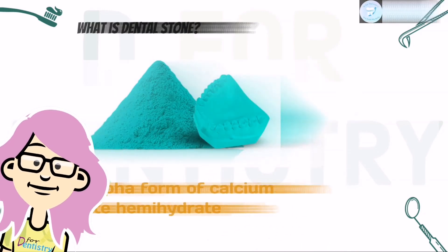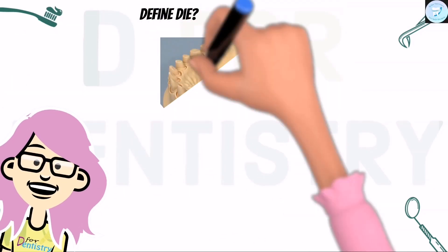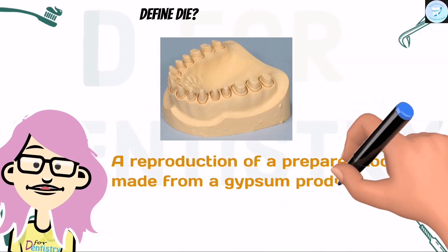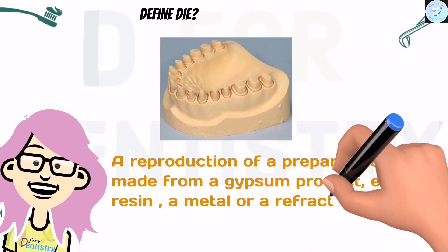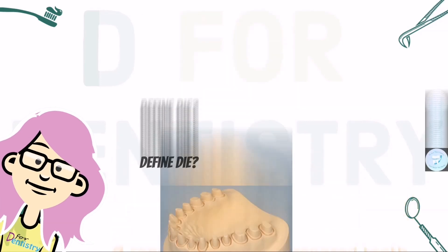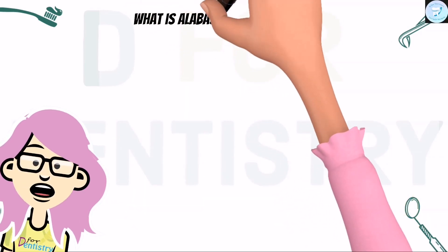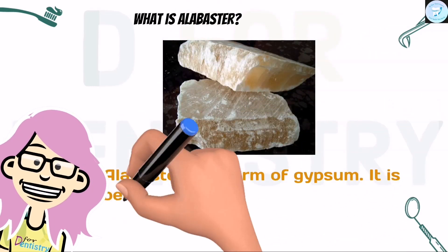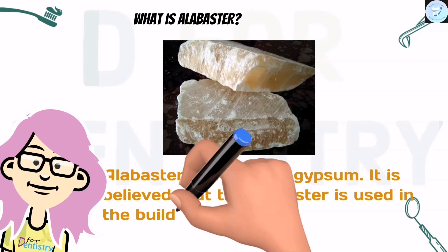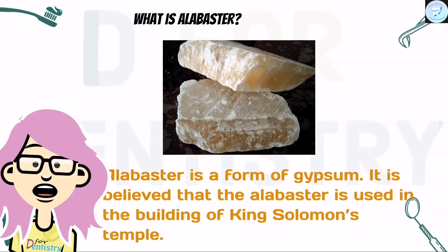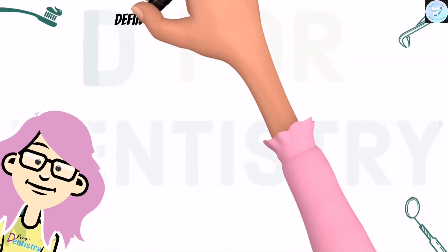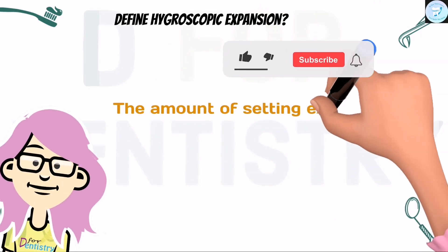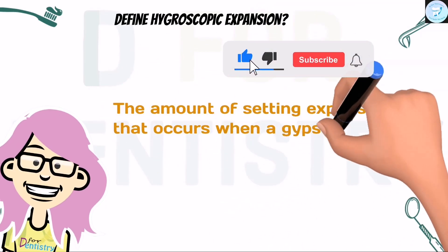Define die. A die is a reproduction of a prepared tooth made from a gypsum product, epoxy resin, a metal, or a refractory material. What is alabaster? Alabaster is a form of gypsum. It is believed that alabaster was used in the building of King Solomon's Temple. Next, very important: define hygroscopic expansion — the amount of setting expansion that occurs when a gypsum-bonded casting investment is immersed in water.